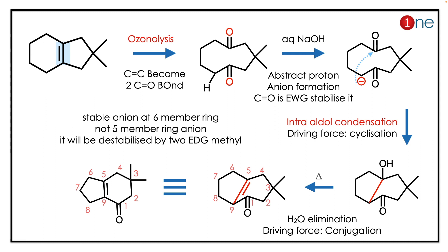You have new five-membered ring formation, then the alcohol and water elimination leads to the conjugated ketone. Finally, you have ring contraction in one way and ring expansion in another way.